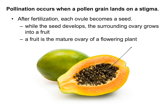Some fruits you wouldn't dare eat — like a dandelion. Each of those little parts of the dandelion that fly off is actually a fruit. Botanists — scientists who study flowers and plants — will refer to anything like this as a fruit.